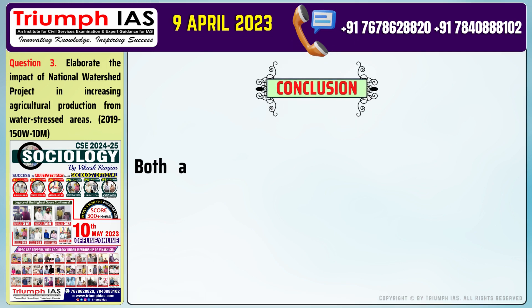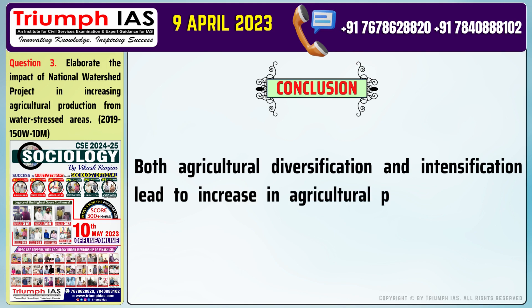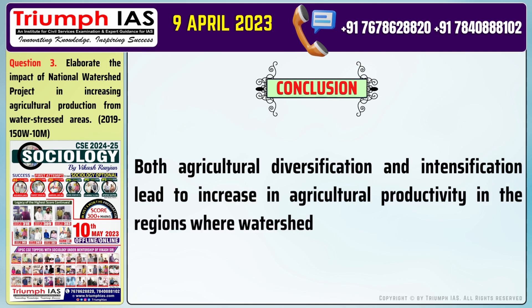In conclusion: Both agricultural diversification and intensification lead to increased agricultural productivity in regions where watershed programs are effective.